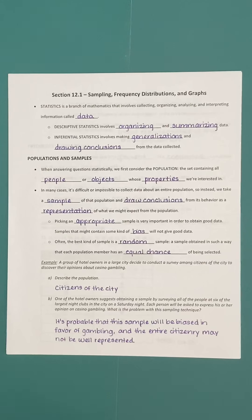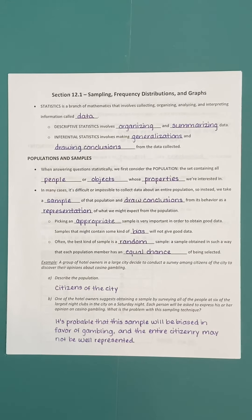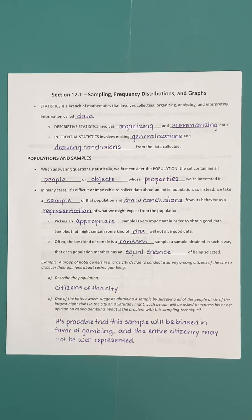Rather than surveying the entire population — the entire city of Houston, for instance — we actually take a sample. Based on what we determine about that sample, we can assume this would likely reflect the population as a whole. One of the hotel owners suggests obtaining a sample by surveying all the people at six of the largest nightclubs in the city on a Saturday night, asking each person their opinion on casino gambling. What is the problem with this sampling technique?